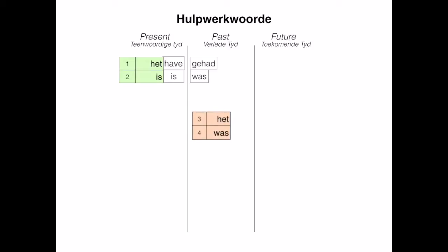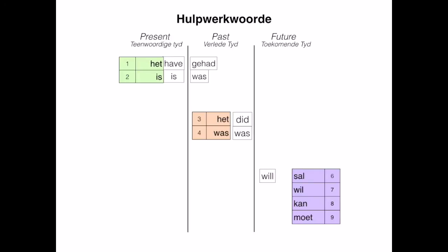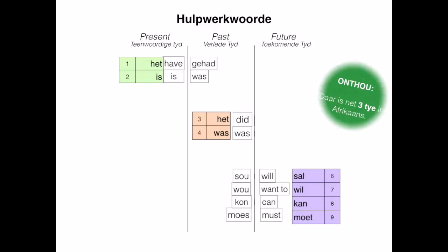For our past tense helping verbs, we have het meaning 'did' and was meaning 'was'. In our future tense section, we have sal, wil, kan, and moet — sal meaning 'will', wil meaning 'want to', kan meaning 'can', and moet meaning 'must'. For their past tense versions: sal changes into sou, wil into wou, kan into kon, and moet into moes.